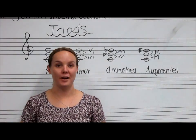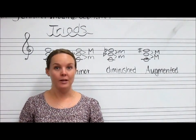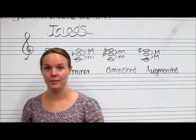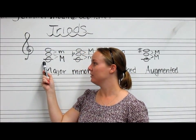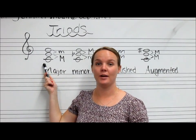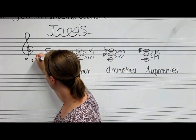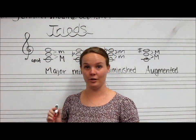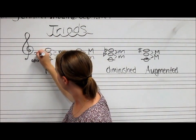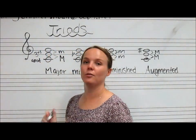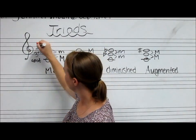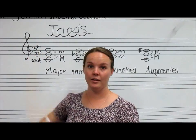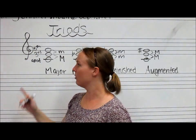In this video we're going to talk about triads and triad quality. But before we get started on that, we'll talk about the different parts of a triad. Your bottom note is known as the root, your middle note is called the third, and your top note is called the fifth. So you have root, third, and fifth. For right now we're doing everything in root position, so the root will always be on bottom.